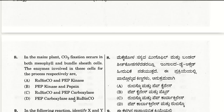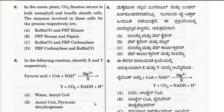The eighth question: in the maize plant, carbon dioxide fixation occurs in both mesophyll and bundle sheath cells. The enzymes involved respectively are PEP carboxylase and RuBisCO. So D is the answer. Maize exhibits the C4 pathway, that is the Hatch and Slack pathway, with the involvement of both PEP carboxylase and RuBisCO enzymes.